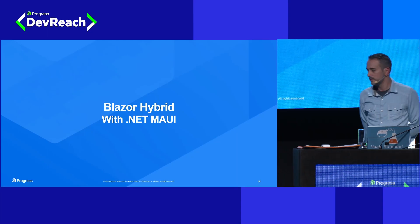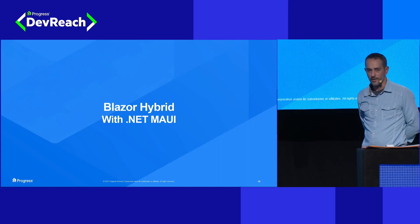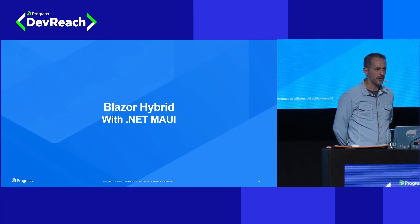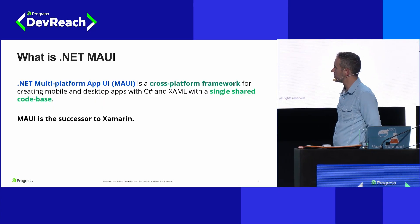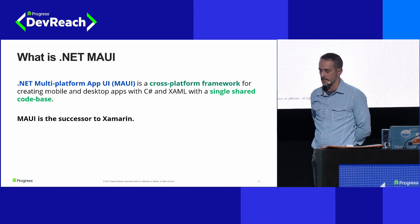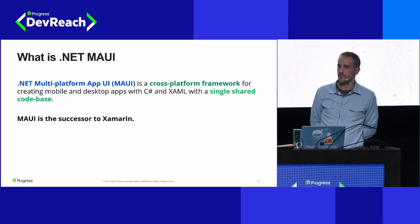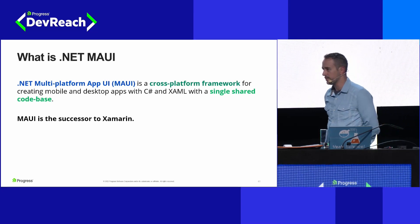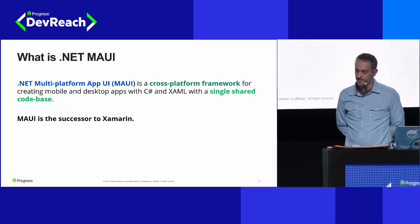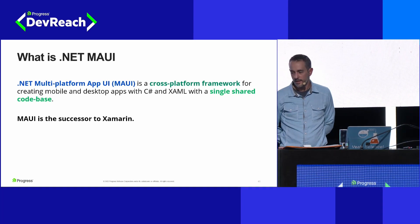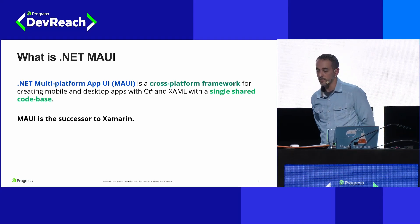And then Microsoft came out with MAUI. We've got another option: Blazor Hybrid with .NET MAUI. So what is MAUI? .NET Multi-platform App UI — MAUI — is a cross-platform framework designed to write multi-platform applications using a shared single code base. It is also the successor to Xamarin. If you're using Xamarin now, this is the next generation. The promise is that we can deploy .NET applications to the desktop and mobile ecosystems.